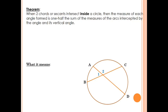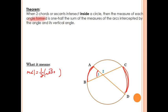If we're looking for angle one, the angle formed is one-half the sum. The measure of angle one is one-half the sum of the measures of the arcs intercepted by the angle and its vertical angle. Here's the arc intercepted by the angle, and here's the arc intercepted by the vertical angle. So if I took the measure of arc AB and added it to the measure of arc CD, that is the relation — that's how I could find that angle.